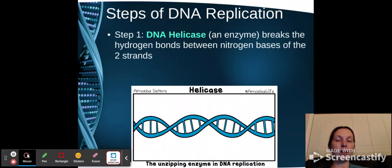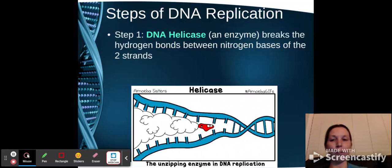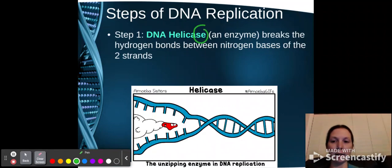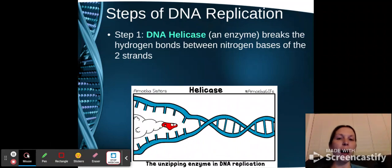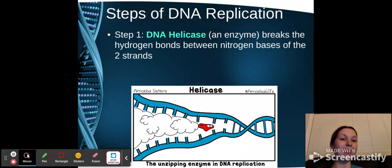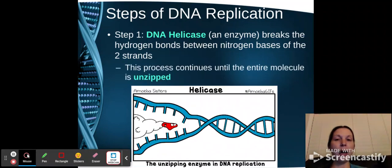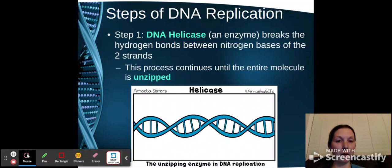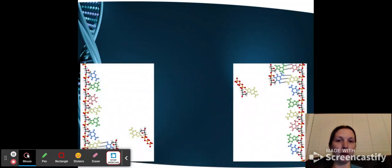So the steps of DNA replication. First, we have DNA helicase, which is an enzyme. Remember, if you see that ACE ending, that tells you we're looking at an enzyme. It will break down the hydrogen bonds between the nitrogen bases of the two strands. So some people refer to helicase as a zipper. It unzips the DNA because it breaks those hydrogen bonds between. And it allows for us to have two separate parent strands that we can then use to make the complementary strand.